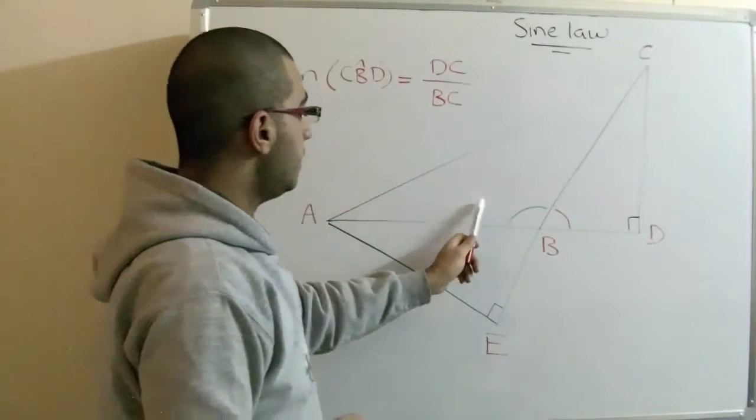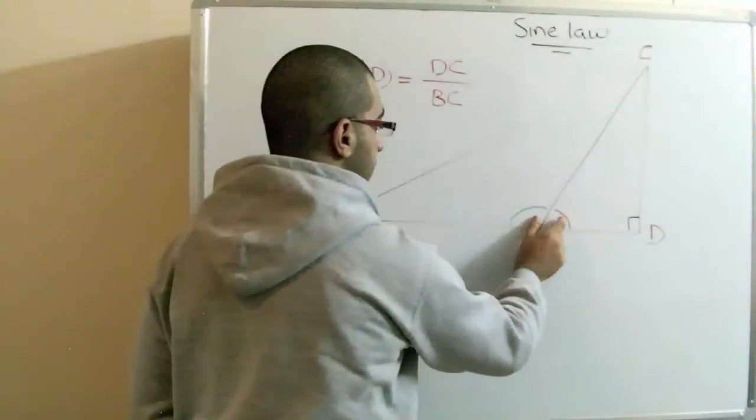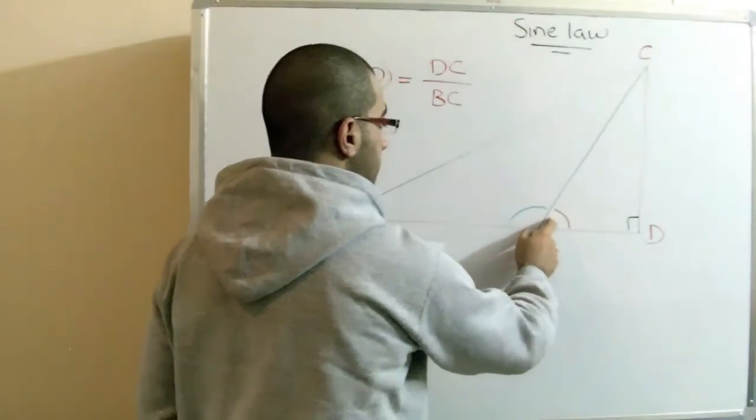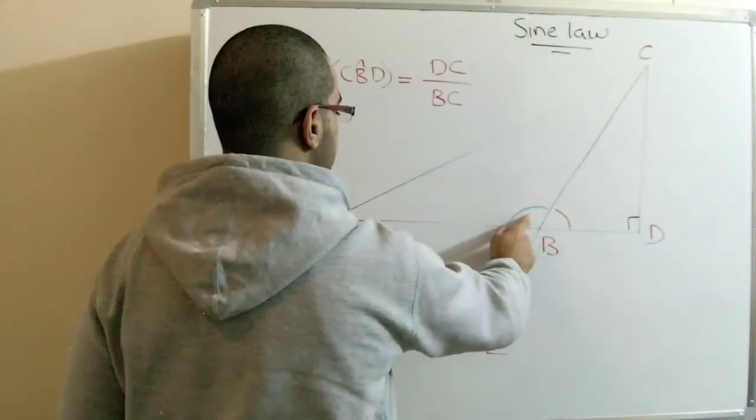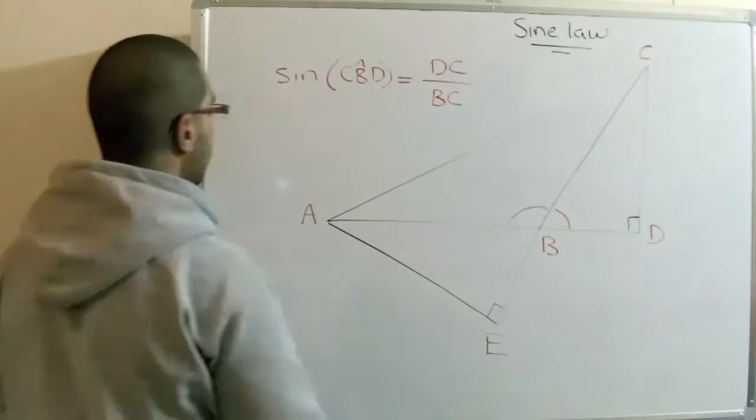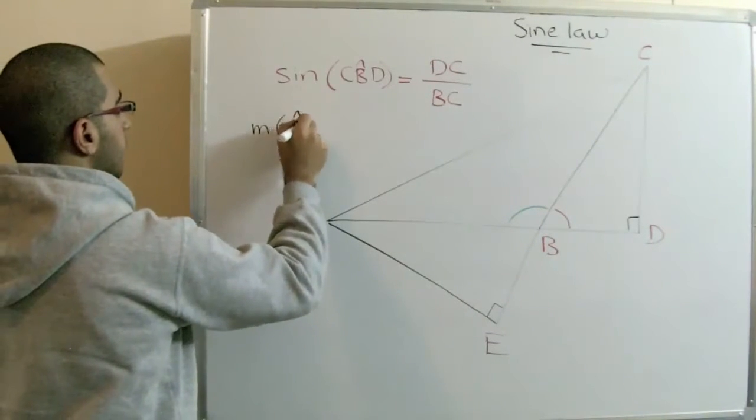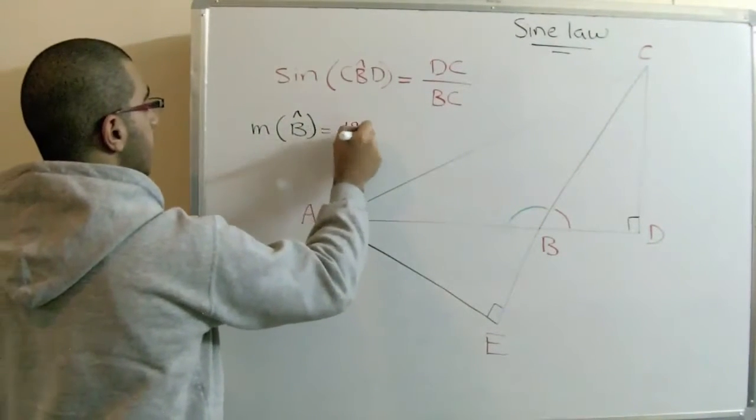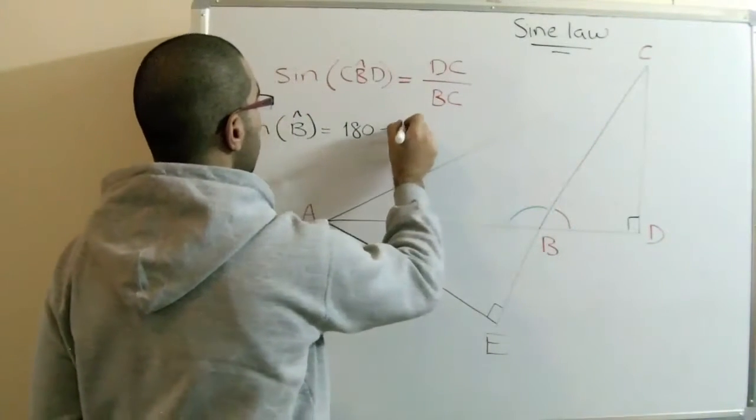And in the figure here, we can notice that there's two angles. If we sum together, they will give us 180 degrees. And we can conclude that the measure of this angle, the angle B, is 180 negative the angle CBD.